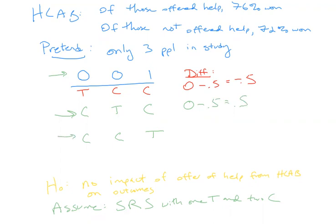Another thing that could have happened is that the third person was offered help and the other two were in control — CCT. The null hypothesis says the win outcomes would still be 0-0-1. Now the person with T has outcome one — they won their case. And the two Cs have outcomes zero and zero. So the difference in win rates is one minus zero, giving a difference in means of one.